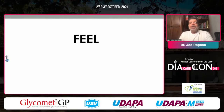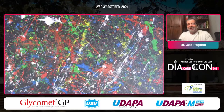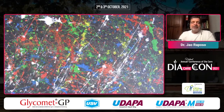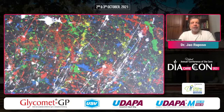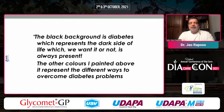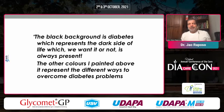Another aspect is: are we able to discuss feelings in our consultations? At summer camps, youngsters were asked to paint something that demonstrates how they feel about diabetes. One youngster described his painting by saying the black background represents diabetes — the dark side of life, which whether we want it or not is always present. But the other colors painted above represent the different ways to overcome diabetes problems. Through this kind of exercise we gained so much more information than in a regular consultation.